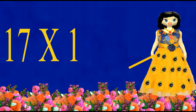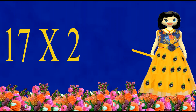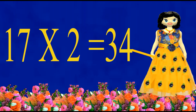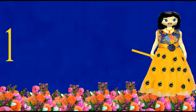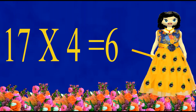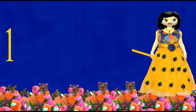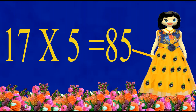Seventeen ones are seventeen. Seventeen twos are thirty-four. Seventeen threes are fifty-one. Seventeen fours are sixty-eight. Seventeen fives are eighty-five.